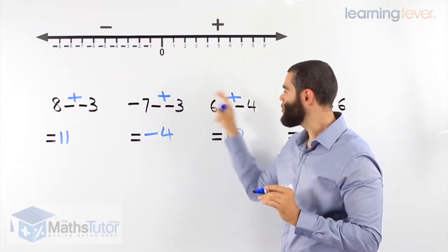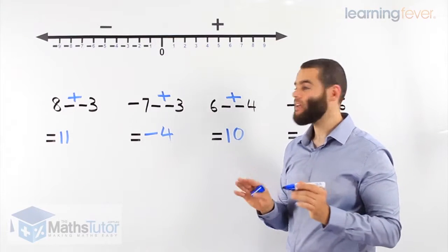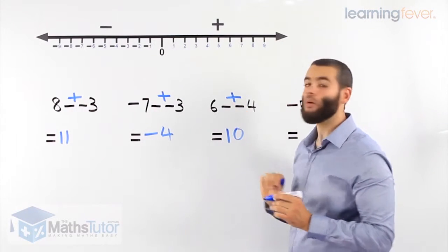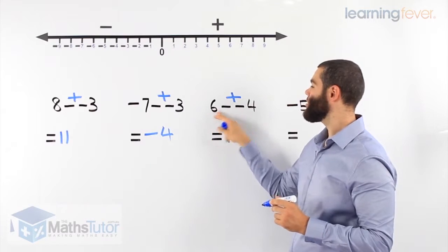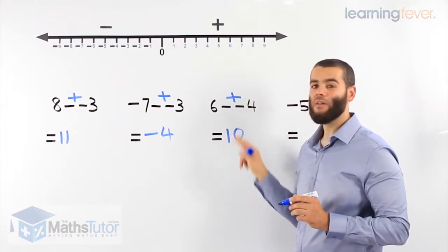Now notice how I always like to put the sign. Why? It helps me with my working out and always shows my teachers I know what I'm doing. Two negatives: 6 plus 4 equals 10. I know straight away when two negatives are together, they become a plus.